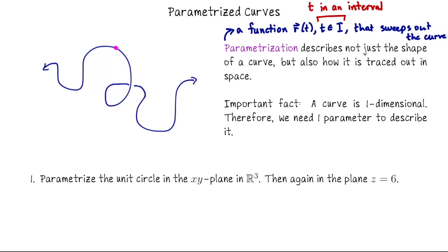So a parametrization is going to be a function R of t that gives you the shape of the curve, but there is not one unique way to parametrize a curve. There are actually infinitely many ways to parametrize, say, this curve over here. So we're interested in not just does R of t trace out the curve we need, but also from R of t as a function we get some information about how it sweeps out the curve.